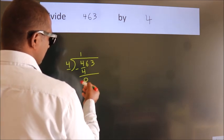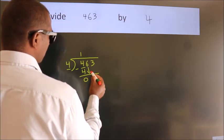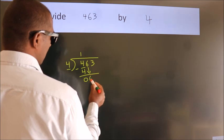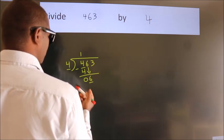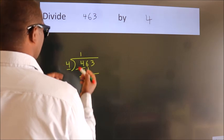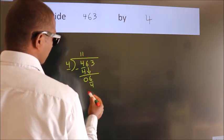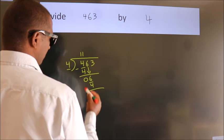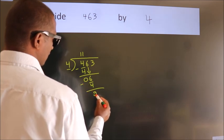After this, bring down the beside number. So 6 down. So 6. A number close to 6 in the 4 table is 4 once, 4. Now we subtract. We get 2.